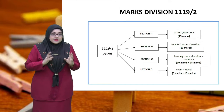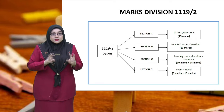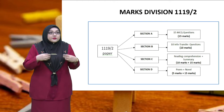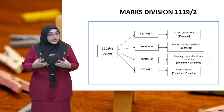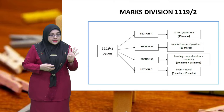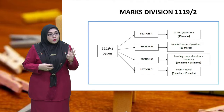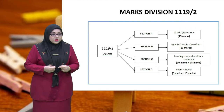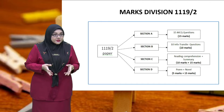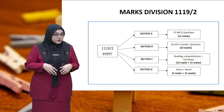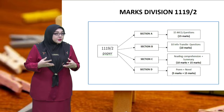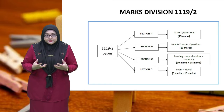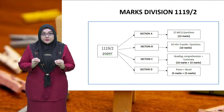The last section is Section D, which has two questions: Poem and Novel. As you have learned in Form 4 and Form 5, there are four poems studied in class, so make sure you are well-versed in all of them. For Kelantan, we learned 'Sing to the Dawn' by Ming Fong Ho. For Novel, you will be given 15 marks in total, so make sure you really read the novel so that you can answer the novel question successfully. That's all for mark division for Paper 2.